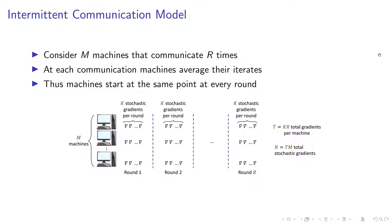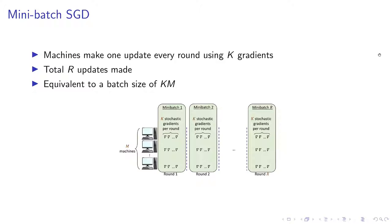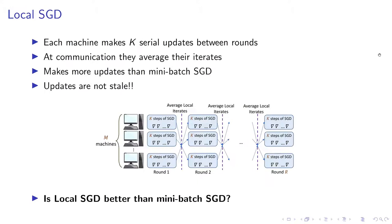One way to use these K stochastic gradients is the simplest way to just use all of them, combine them, average them and make one mini-batch SGD update. So, combining all M machines, this looks like a mini-batch SGD update with batch size of KM and we make R such updates. This is usually what's done in distributed optimization, the most vanilla implementation you'd find in most packages.